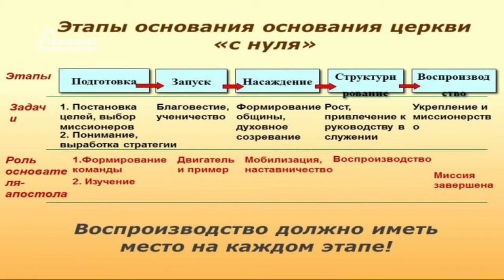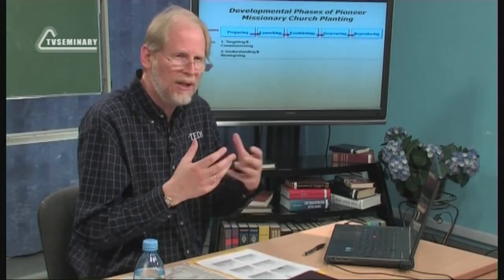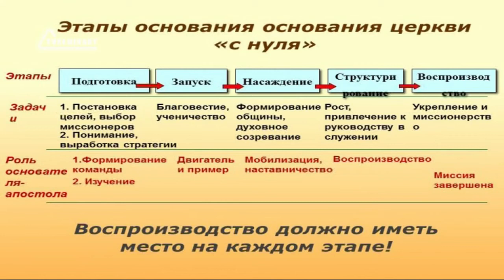На начальном этапе решаются задачи постановки целей и выбора служителей: вы определяетесь, где будете основывать общину и кто этим будет заниматься. После этого приступаем к изучению необходимой информации о людях, которым собираемся благовестовать. Начало реализации планов связано прежде всего с благовестием и воспитанием учеников. Следующий этап предполагает формирование общины, создание духа единства, осознание себя церковью, телом Христовым. Фаза структурирования — это развитие служений, воспитание лидеров, подготовка и привлечение к руководству простых членов церкви.